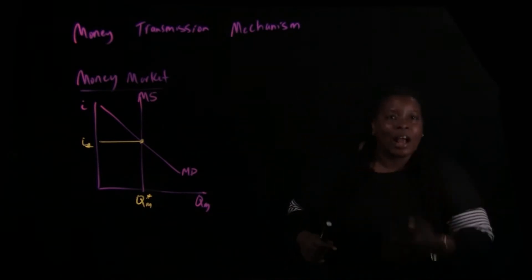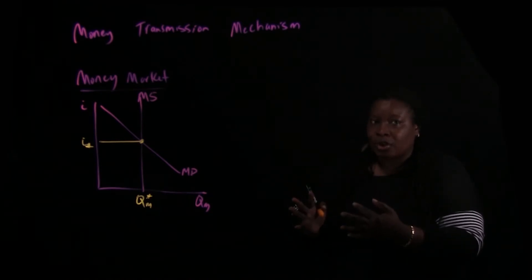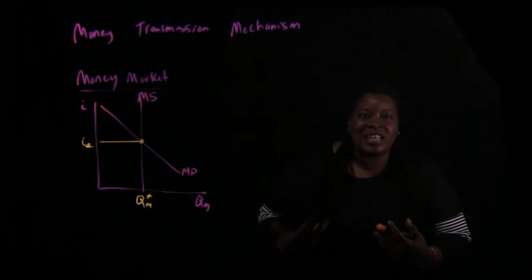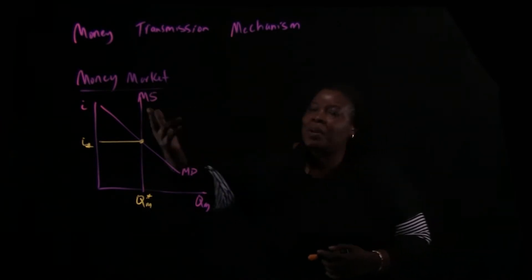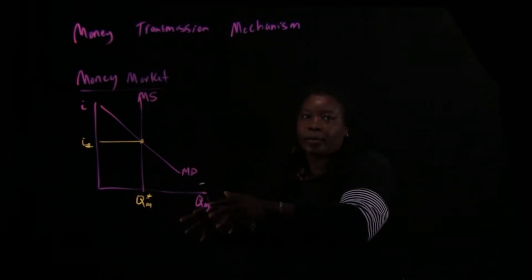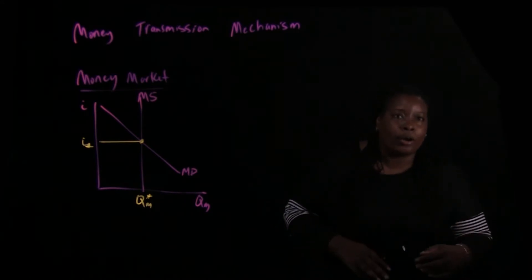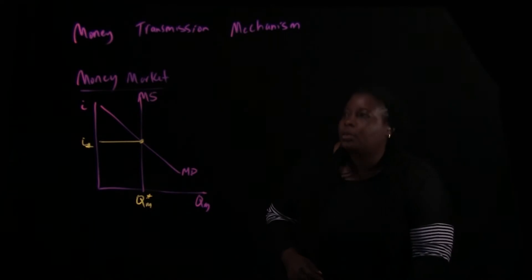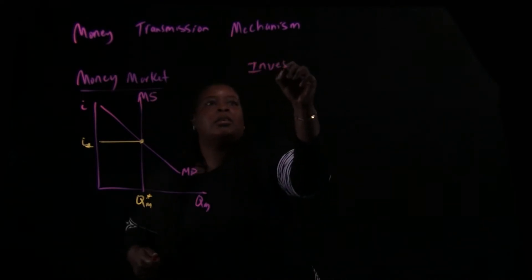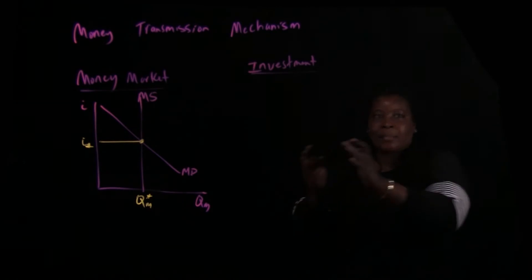The Fed has control of the amount of money supplied — and if you're thinking it's supply, you're absolutely right. So the money transmission mechanism works like this: the Fed targets the interest rate by manipulating the money supply to get a desired change in the interest rate. Then this transmits to the investment market, so I'm drawing the graphs side by side.